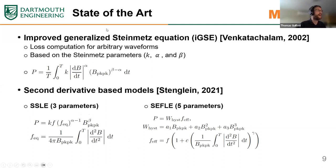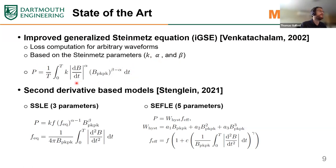Twenty years ago at Dartmouth, the IGSE — the Improved Generalized Steinmetz Equation — was introduced, solving the limitation that the model can be applied to arbitrary waveforms. It is also based on the Steinmetz parameters K, alpha, and beta, but now uses an integral equation valid for any wave shape, stating that losses are proportional to the derivative of flux density to the power of alpha times the peak flux density to the power of beta minus alpha. This is currently the most widely used equation-based model for designing magnetics.